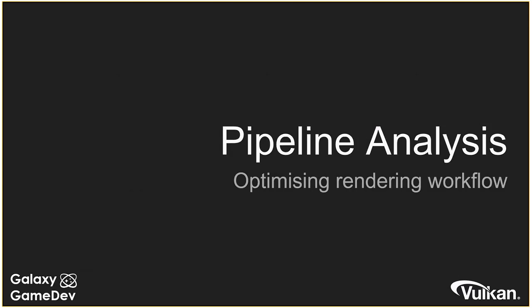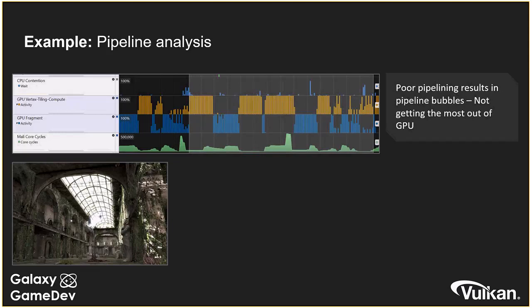Next, I want to cover how we can look at workflows to understand what the GPU is doing and how we can improve it. This is a sample trace from Sirius Engine, a Vulkan partner we've been working with. Using Arm's Streamline tool, we can see the GPU at a really microscopic level. We've got a frame here, and we can see a problem: while the GPU is always doing something — either vertex or fragment work — it's never doing both in parallel, so there's an opportunity to do better.